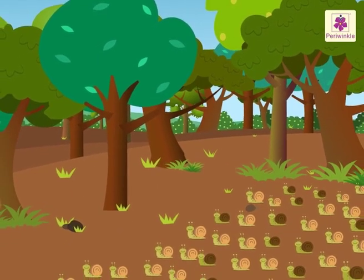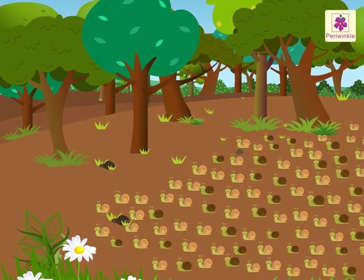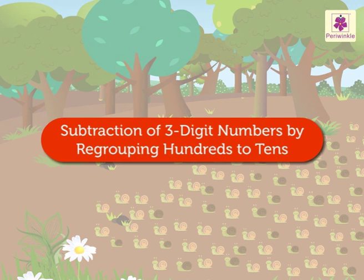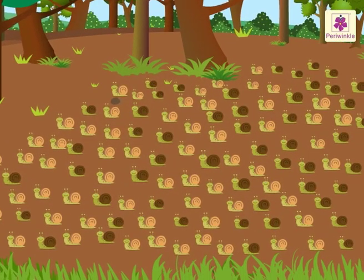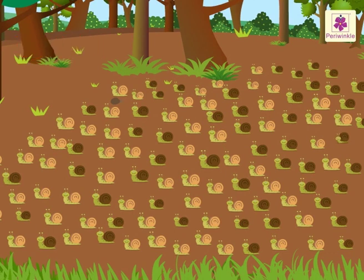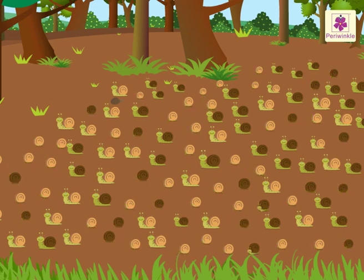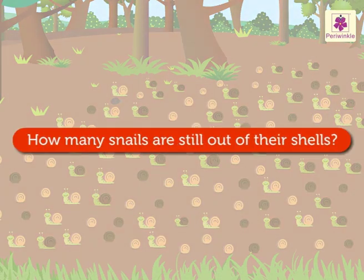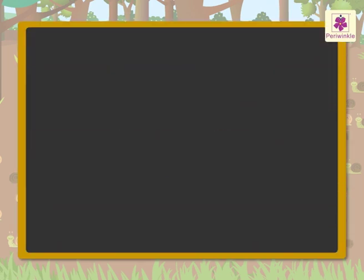Hi friends, we are back at the forest today. Let us learn about subtraction of three-digit numbers by regrouping hundreds to tens. Look — snails! There are four hundred thirty-eight snails on the ground. Two hundred eighty-three of them hid themselves in their shells. How many snails are still out of their shells?